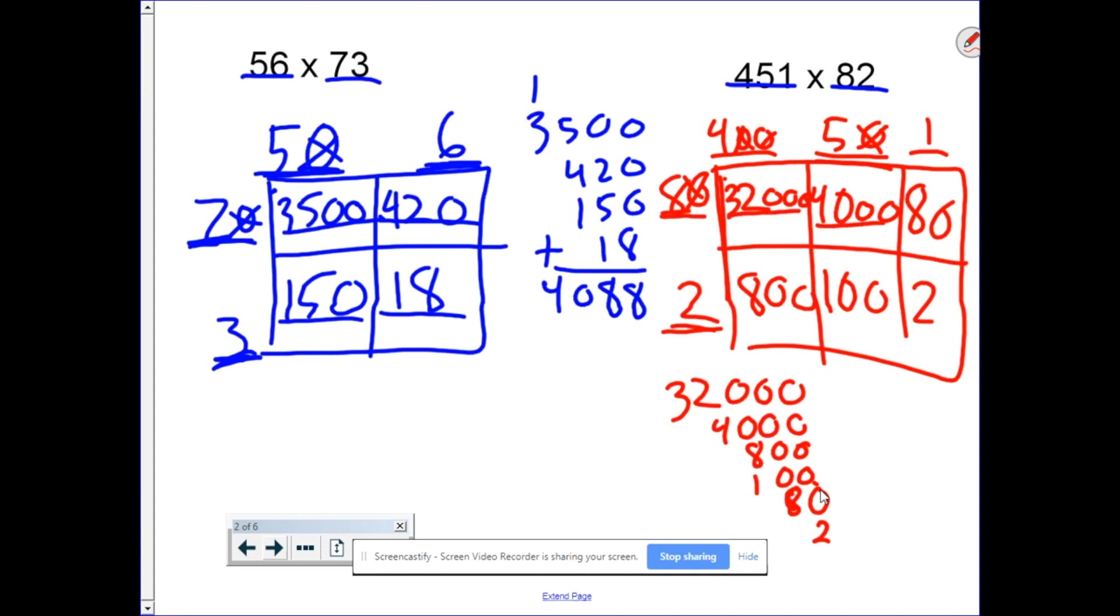32,000, 4,000, 800, 100, 80, and 2. We have 2, 8, 9, 6, and 3. The answer is 36,982.